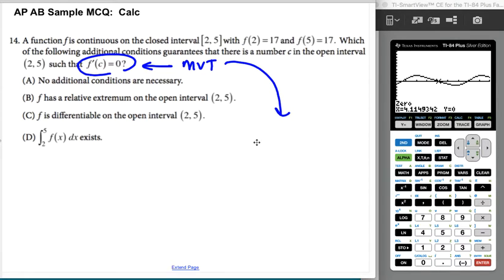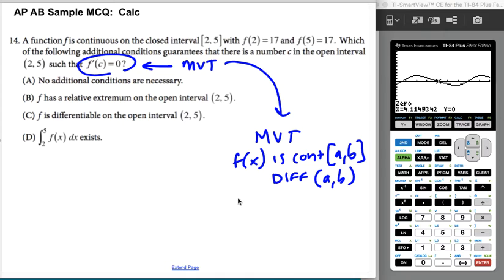The MVT says that if f(x) is continuous on a window from a to b and differentiable on the open interval from a to b, then there's some f'(c) such that that derivative equals the average slope. You can see that this average slope would be (17 - 17)/(5 - 2), so it would be 0.